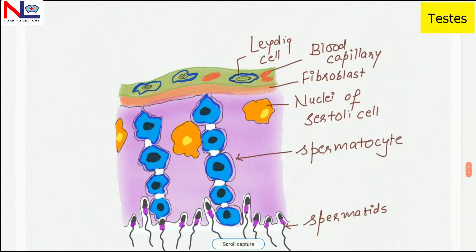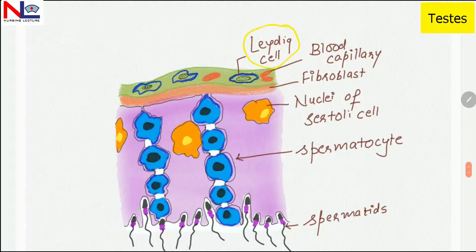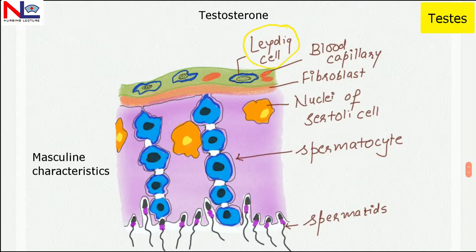There are spaces within the seminiferous tubules, and within those spaces there are cells termed interstitial cells or Leydig cells, which release one androgen hormone — testosterone — which promotes the development of masculine characteristics.